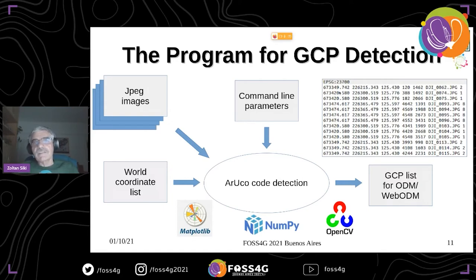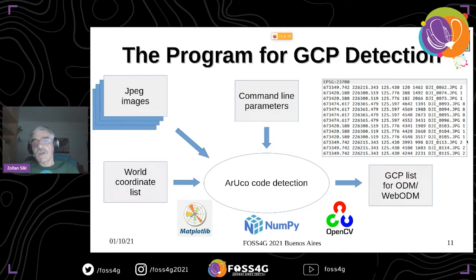The output text file contains the coordinate reference system, the coordinates of the points in the target coordinate reference system, the image coordinates, the image name, and optionally the encoded ID of the marker.